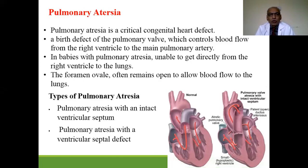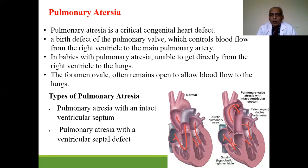The fourth cyanotic congenital heart disease is pulmonary atresia — a very critical condition. The pulmonary valve, which controls blood flow from the right ventricle to the main pulmonary artery, is atretic, making it unable to push blood from the right ventricle into the lungs. The foramen ovale often remains open to allow blood flow to the lungs. There are types with intact ventricular septum or with a defect in the interventricular septum.